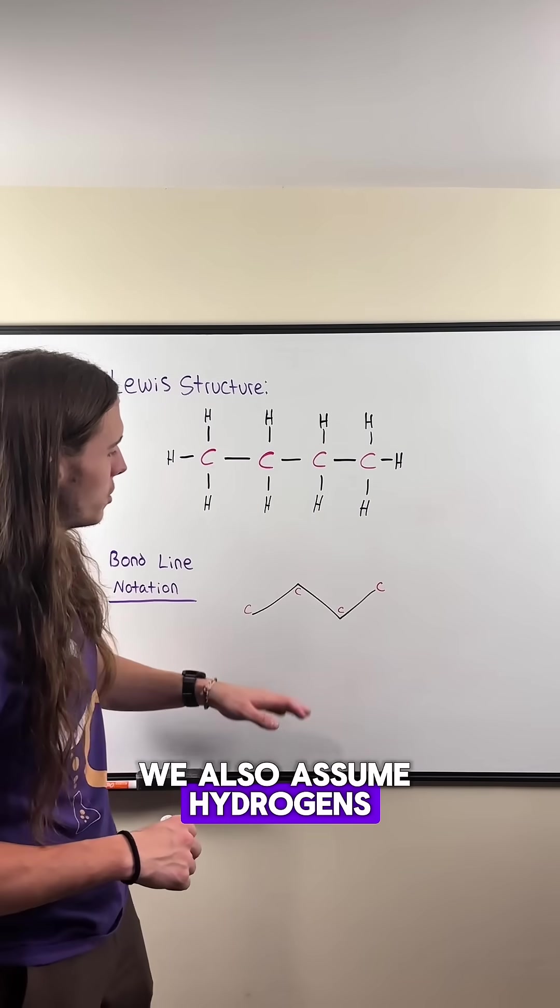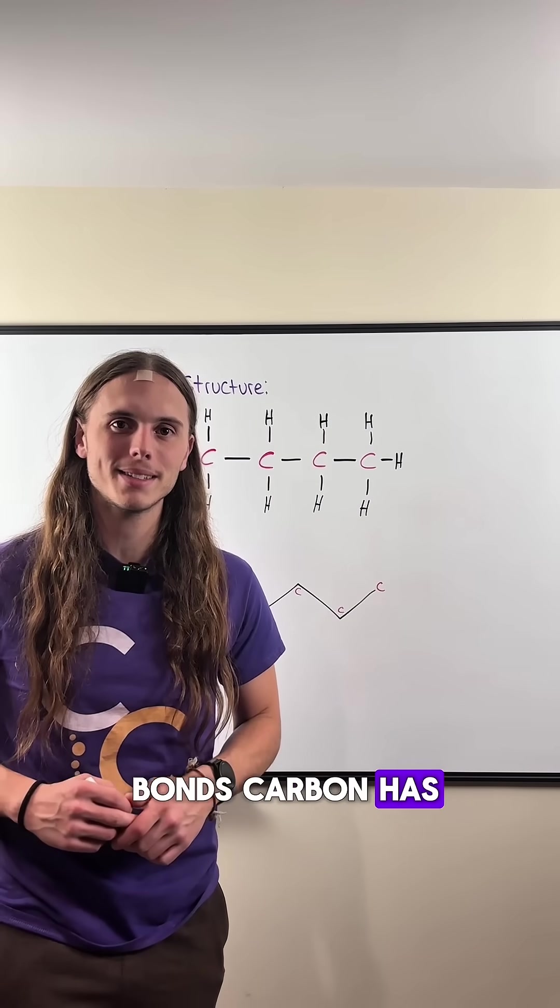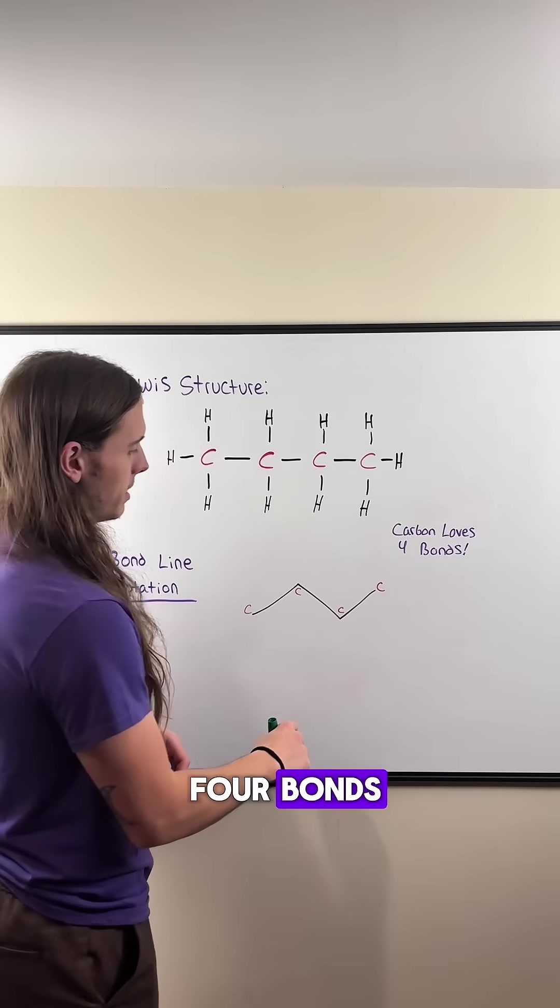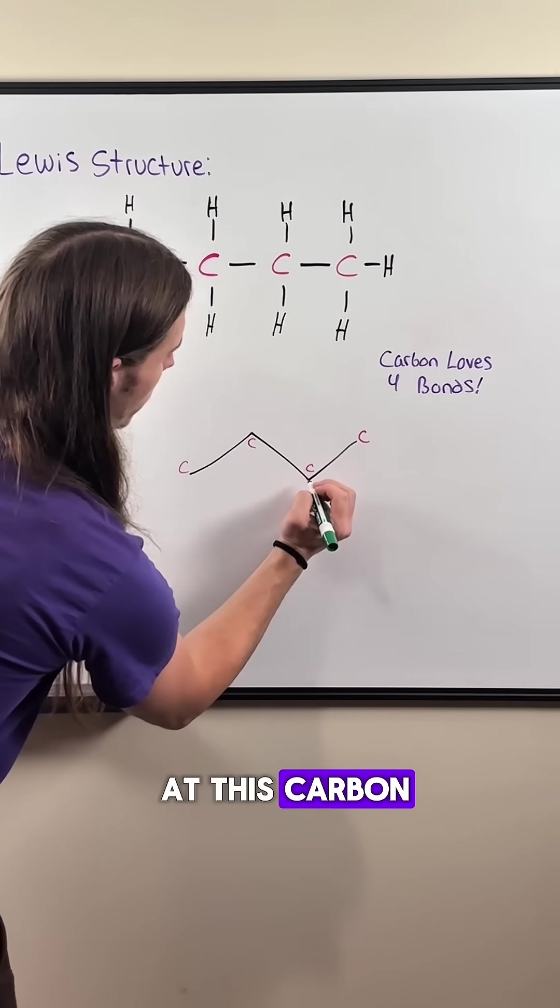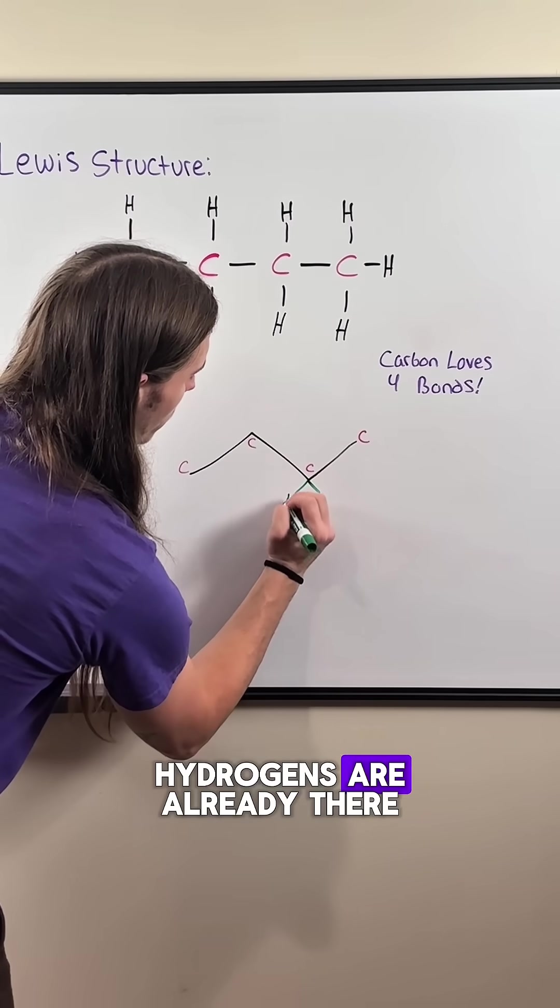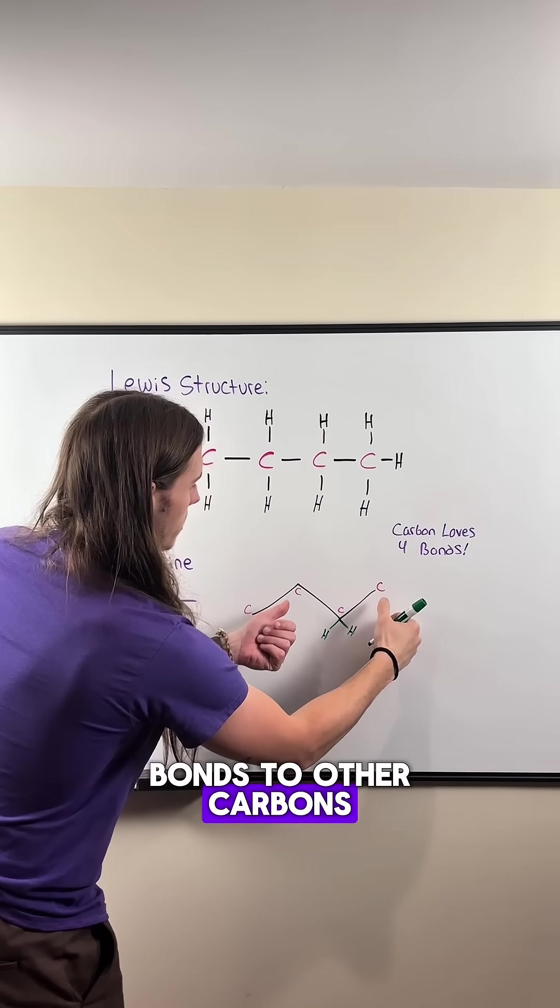We also assume hydrogens are already there depending on how many bonds carbon has. Neutral carbon will have four bonds, and if we look at this carbon, we can assume two hydrogens are already there since it has two bonds to other carbons.